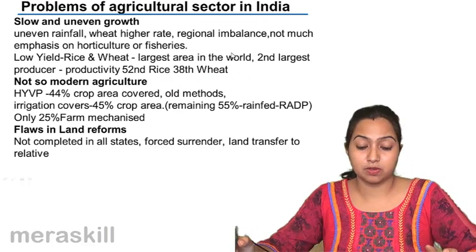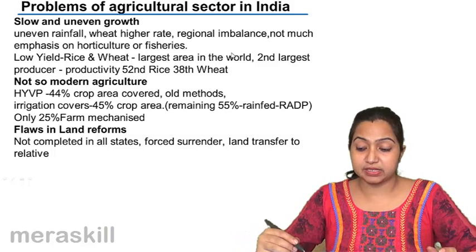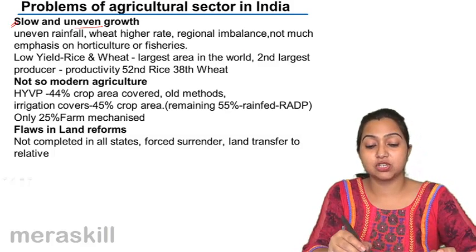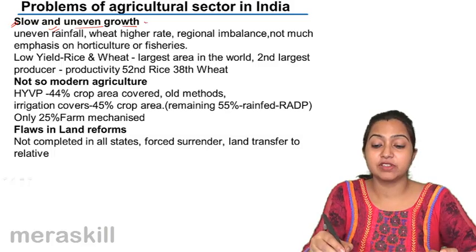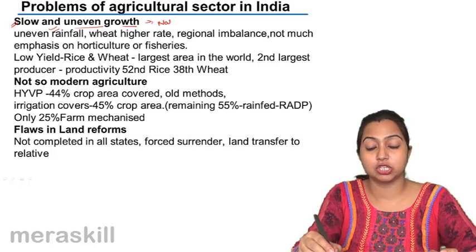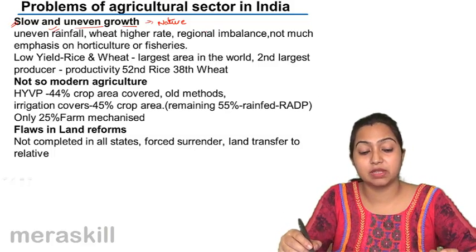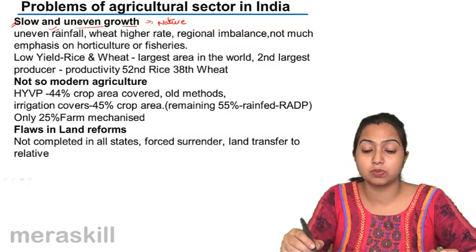Let us talk about the problems of the agriculture sector. It is a sector which has grown slowly and which has shown uneven growth. Why? Because it is a sector which depends highly on nature. When the monsoon is good, agriculture produces well, and when it is not, it is adversely affected. Because of uneven rainfall, the growth has also been uneven.